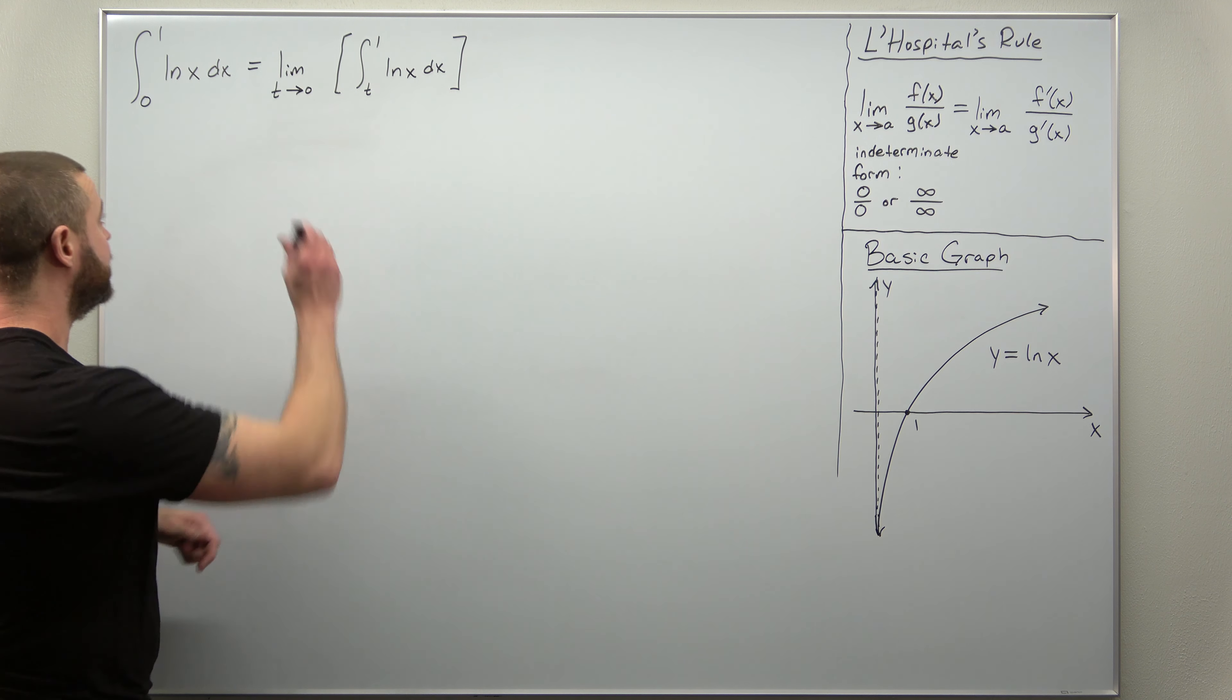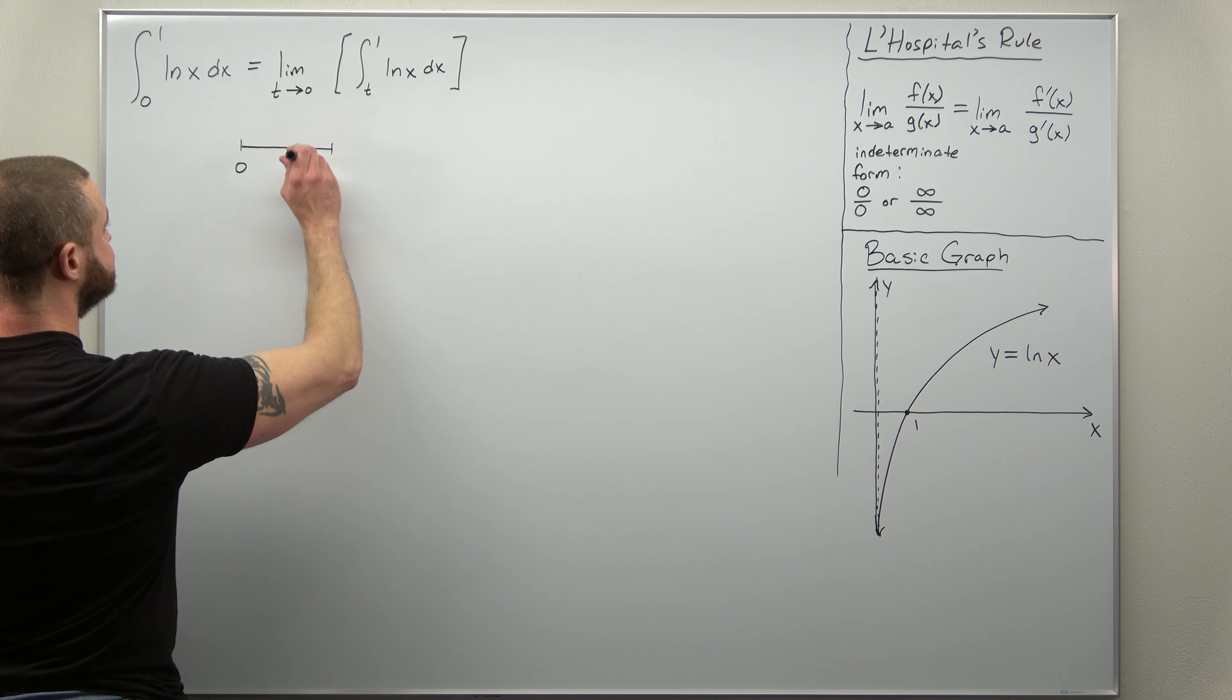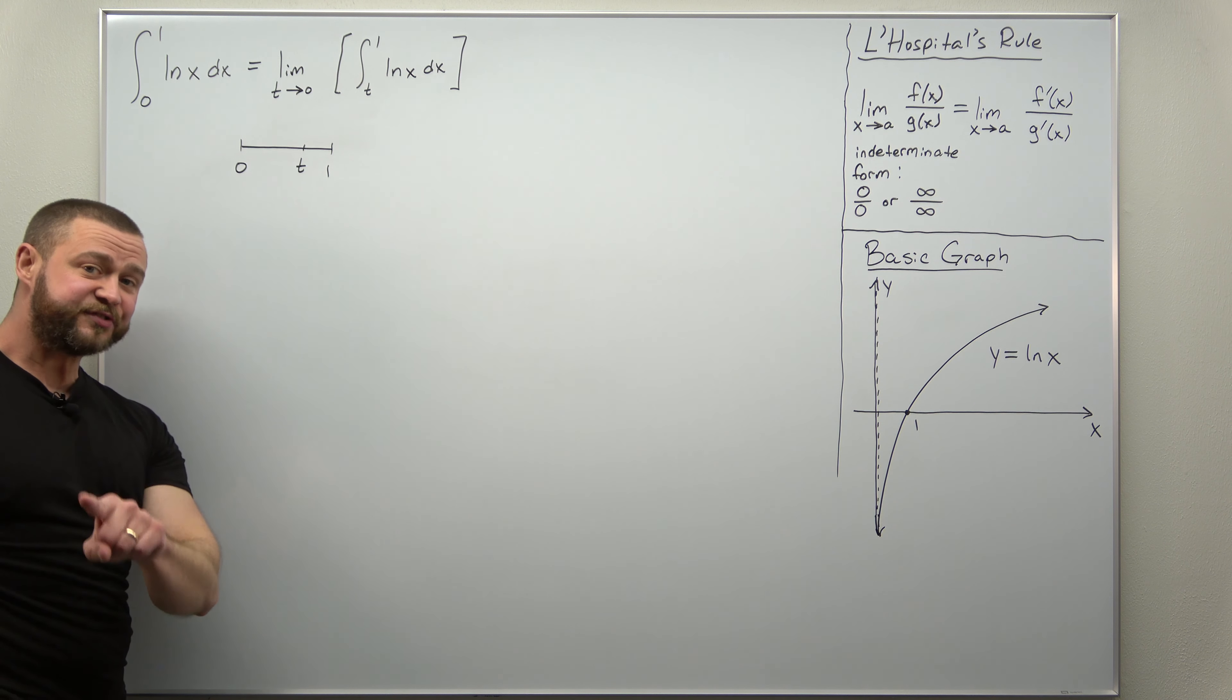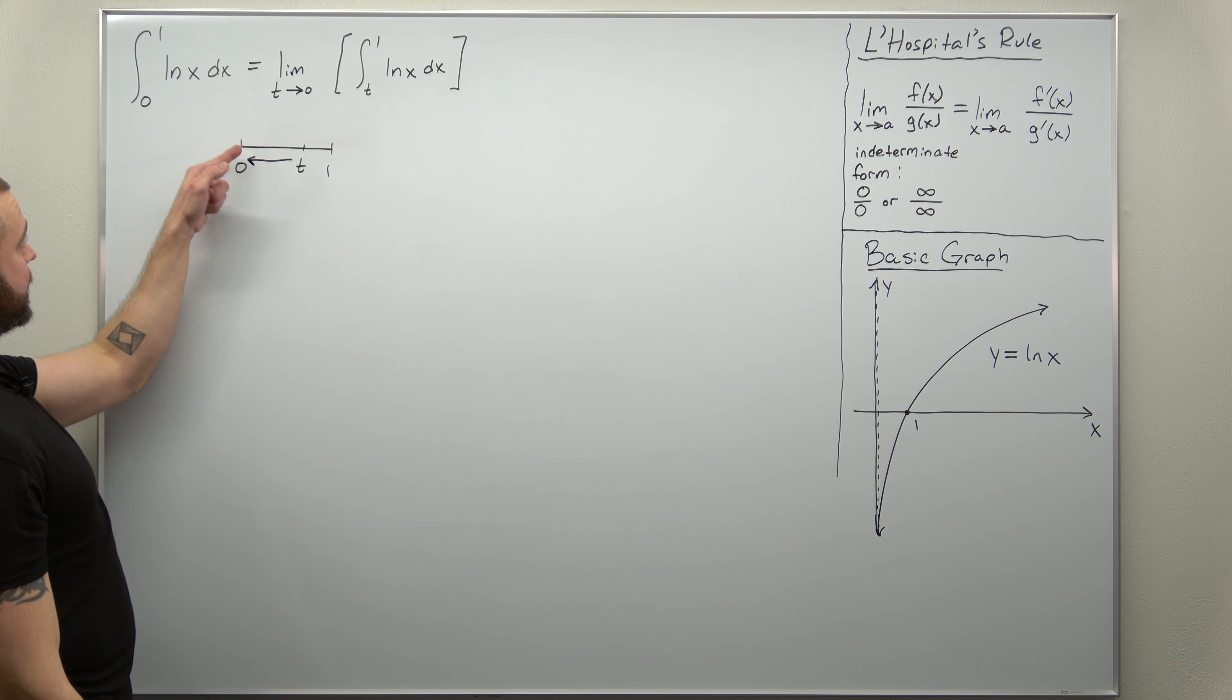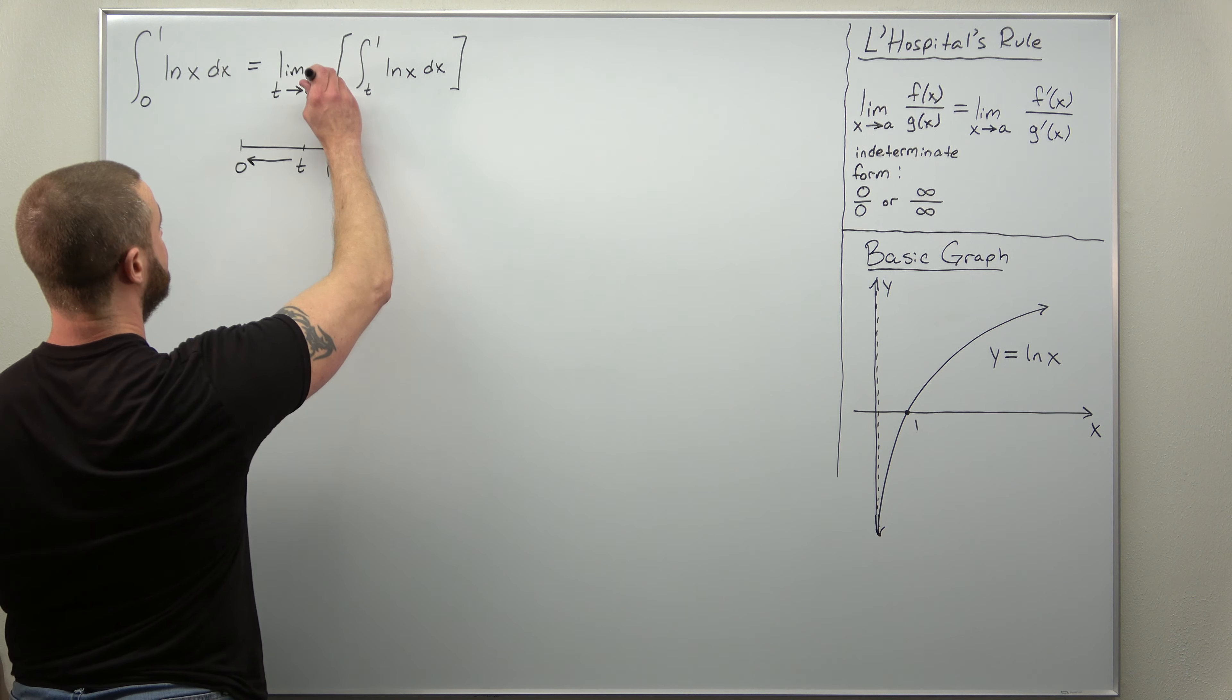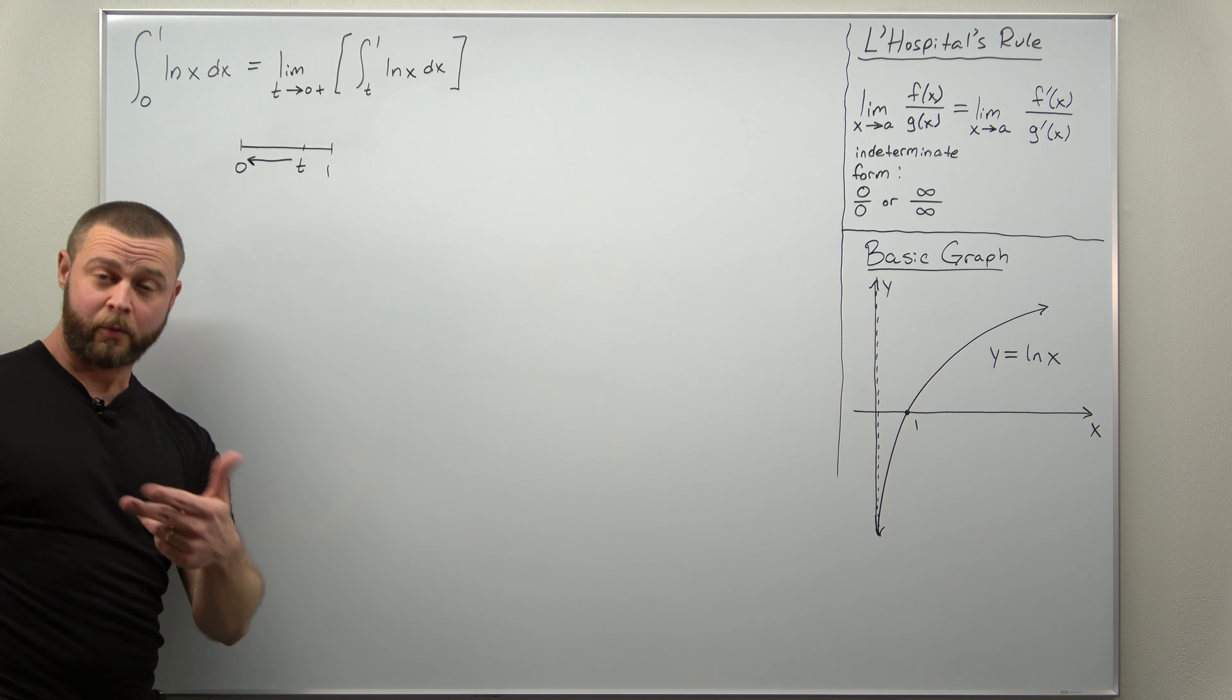So we're going to determine that by drawing the interval 0 to 1. It's a very basic sketch. The variable t is somewhere in the middle, and in order for t to approach 0 while staying within the interval, we're going to have to approach 0 from the right side. Notice if we approach 0 from the left, we're outside of the interval, so our limit here is really a limit from the right side to 0. So just make sure you're okay on that, and you can set up and determine that correctly. Usually a basic sketch of the interval will help you with that.